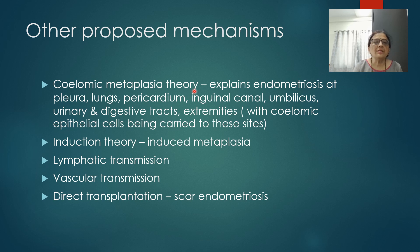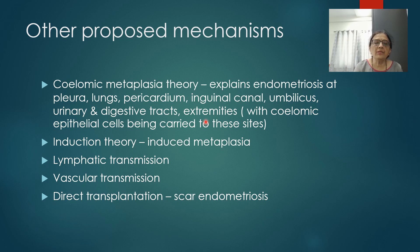Other proposed mechanisms include the coelomic metaplasia theory, which explains endometriosis at the pleura, lungs, pericardium, inguinal canal, umbilicus, urinary and digestive tracts, and extremities. Here, coelomic epithelial cells are carried during intrauterine life to all these sites, and there is a possibility that these coelomic cells undergo metaplasia and are converted into endometrium-like cells.